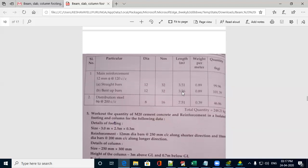If you can compare this, it will be always cranked bar length will be more. Weight per meter, you can work out. You will get 0.89. If you multiply number, length and weight, you will get the quantity.